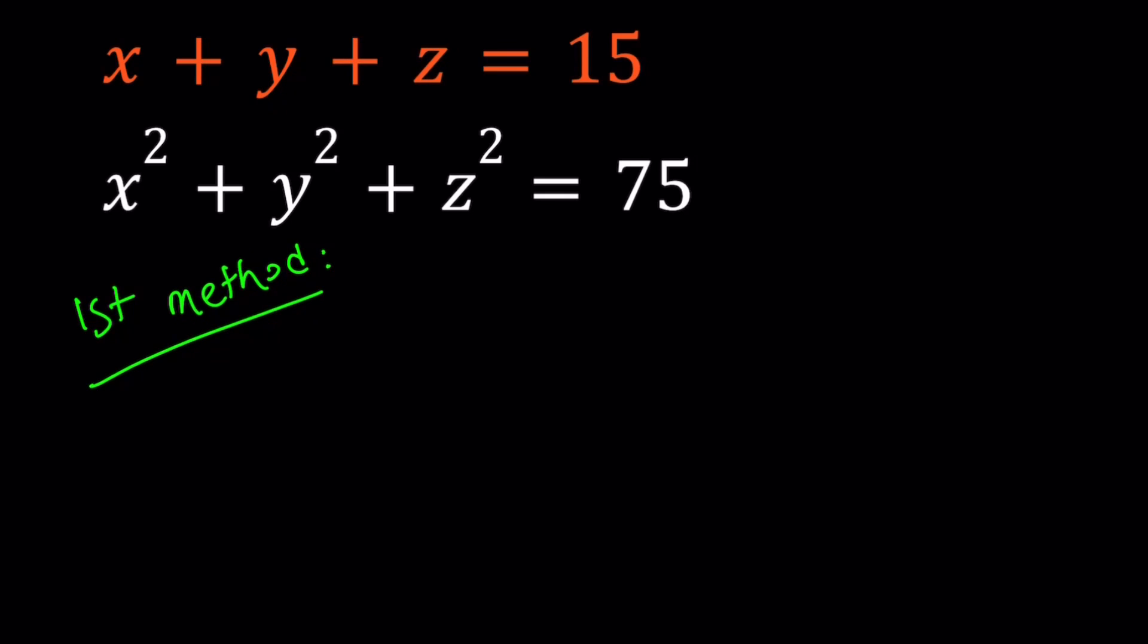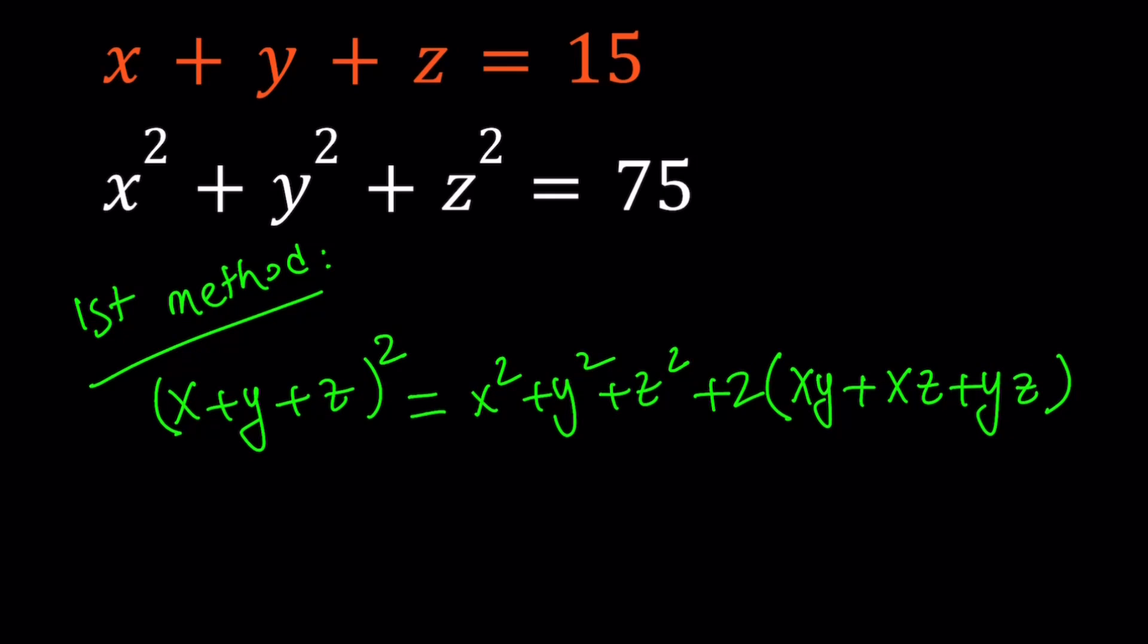For my first method, I'm going to use algebra and square the first equation. Because we have the sum of squares, so it only makes sense to square x plus y plus z. When you square x plus y plus z, you get the following: x squared plus y squared plus z squared, and then you get the two xy, the two xz, and the two yz, which you can write with a common factor of two: xy plus xz plus yz.